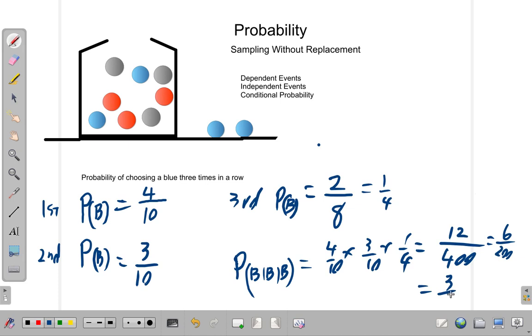But you can still cancel down. Two into six is three. Two into two hundred is one hundred. So, it's three over one hundred, or three percent.